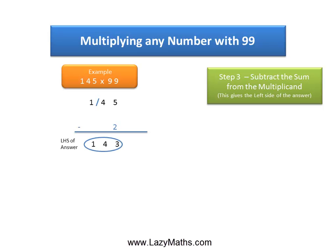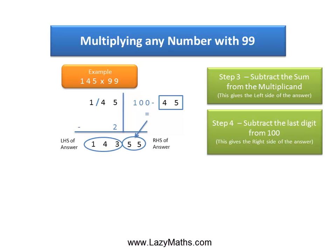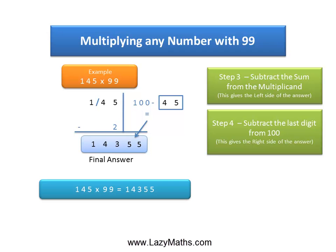143 becomes the left-hand side of the answer. To get the right-hand side of the answer, we simply take the 45 and subtract the 45 from 100 to get 55 as the right-hand side. Combining the left and the right sides together, we get our final answer. So, 145 times 99 equals 14,355.